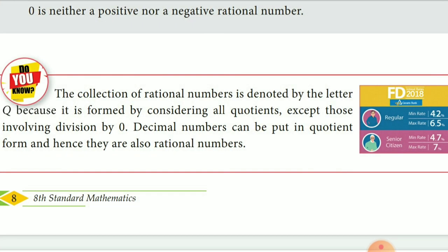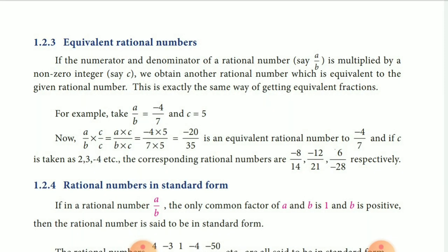Next, the collection of rational numbers is denoted by the letter Q because it is formed by considering all the quotients except those involving division by 0. Decimal numbers can be put in the form of rational numbers.